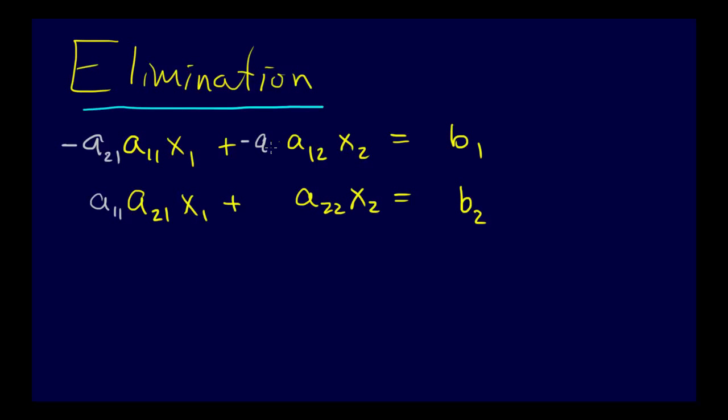So I'll go minus a21 here, minus a21 here, and a11 there, a11 here, and a11 here.